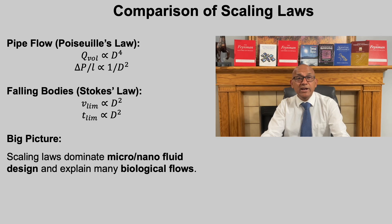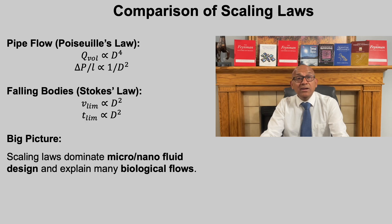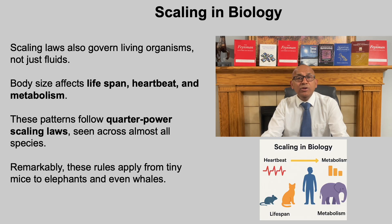Let us compare two important scaling laws. From Poiseuille's law for pipe flow: the volumetric flow rate increases as the diameter to the fourth power, while the pressure drop per unit length scales as one over the square of the diameter — even small changes in diameter have a huge effect on flow and pressure. From Stokes' law for falling bodies: the terminal velocity scales as the square of the diameter, and the time to reach that velocity also scales as the square of the diameter. The big picture is that scaling laws dominate the design of micro and nano fluidic systems and explain many phenomena in biological systems.